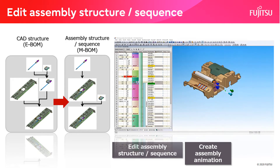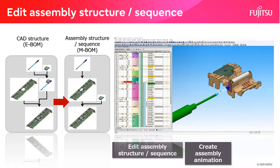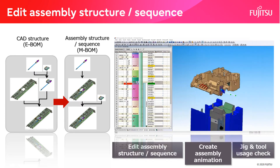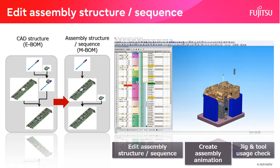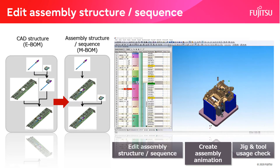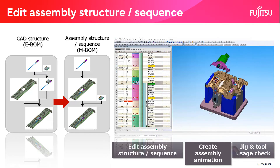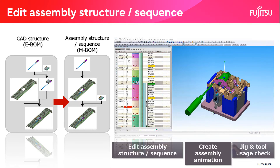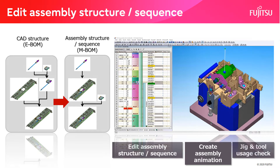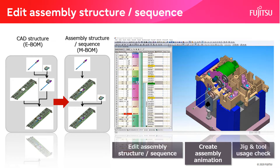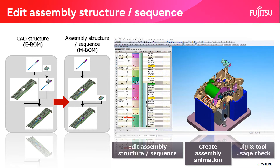Jigs and tools can also be displayed during the animation. Interference between parts in the assembly route and with jigs and tools can also be checked, so assembly availability can be verified.